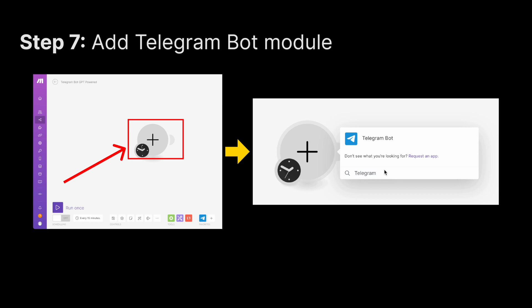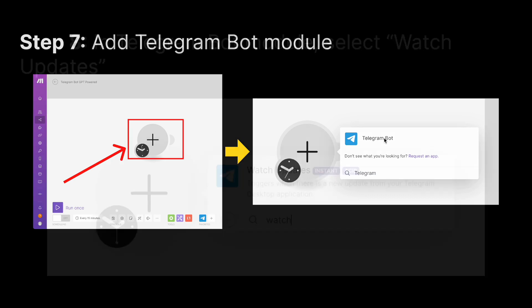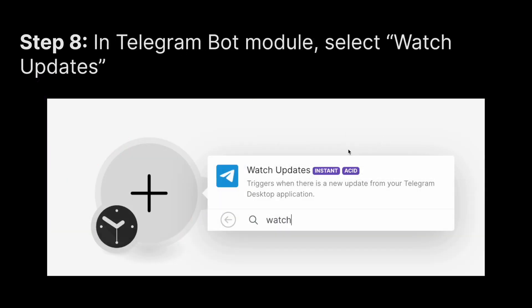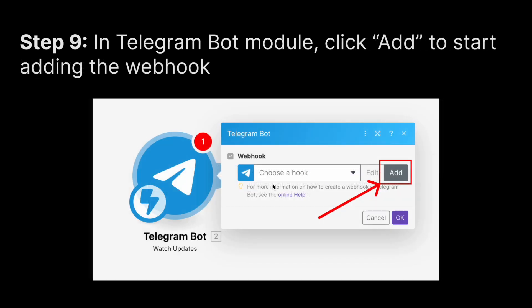Type Telegram and you should see Telegram Bot — click on it. Then search for Watch Updates and click on it; this is the trigger to start the whole chatbot process. If you're here for the first time, you won't have a webhook yet. Click on Add to add a webhook to the Telegram bot.